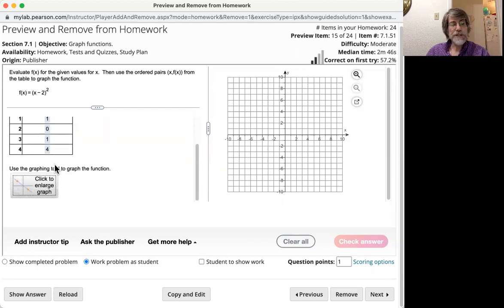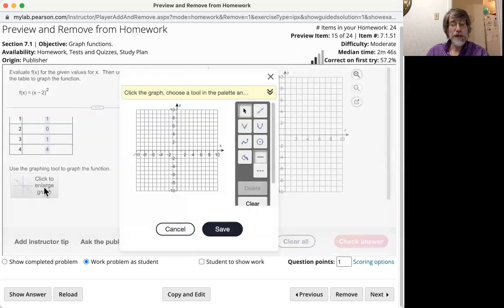Now, scroll down a little bit and you'll see this little icon that says click to enlarge graph. You want to do that. And then you'll see some palettes here depending on the shape you want to graph. We do believe this is a parabola.